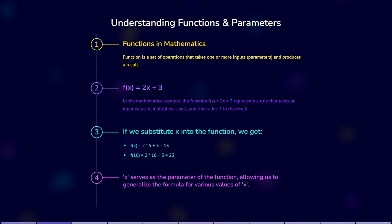In the mathematical context, the function f(x) = 2x + 3 represents a rule that takes an input value x, multiplies it by 2, and then adds 3 to the result.